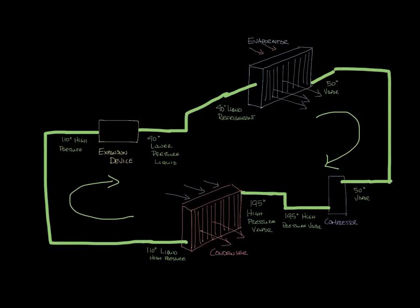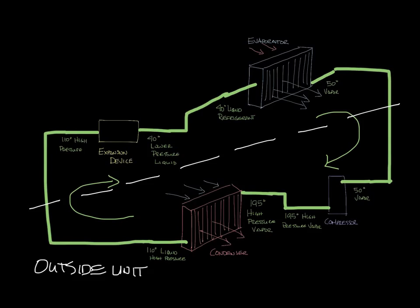And the outdoor unit has the condenser and compressor plus a fan to pull the air through the condenser and reject the warm air into the outside. So if I draw a line here, that kind of shows what is on the outside of the house and what's on the inside of your house.